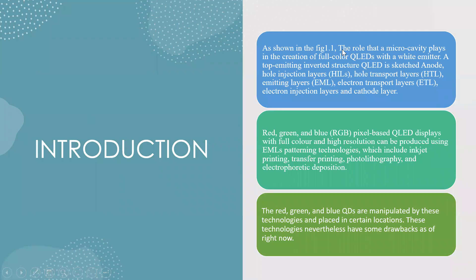As shown in figure 1.1, the role that a micro activity plays in the creation of full color QLEDs with a white emitter: a top emitting inverted structure QLED sketched with anode, hole injection layers, hole transport layers, emitted layers, and electron transport layers. Red, green, and blue pixel-based QLED displays with full color and high resolution can be produced.